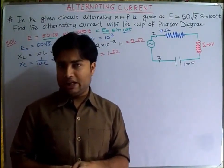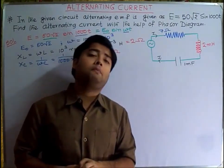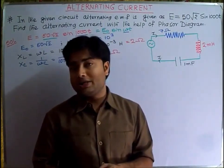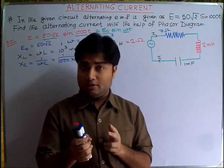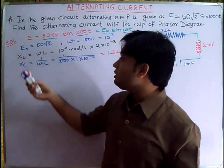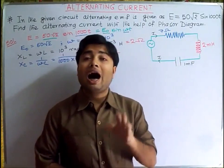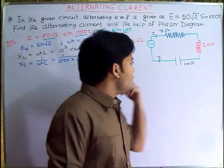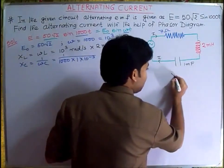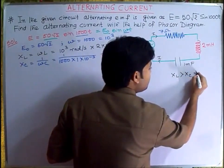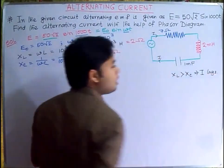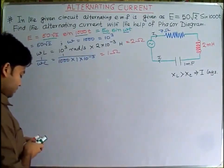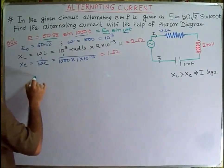From our previous discussion on LCR circuits, when XL is greater than XC, the current I lags behind the EMF. Here XL = 2 ohm and XC = 1 ohm, so XL > XC, meaning I lags. Let us now understand this with the help of a phasor diagram.